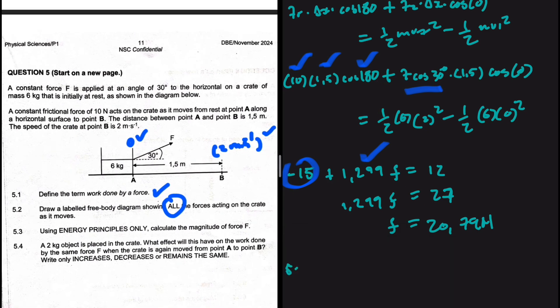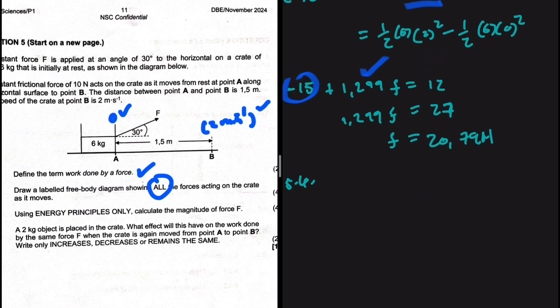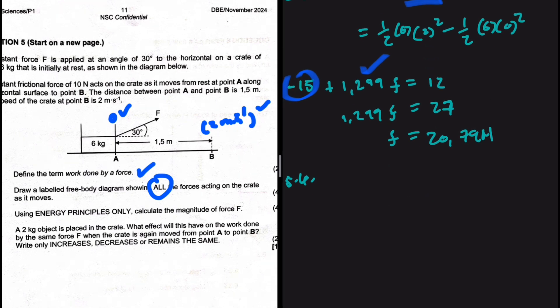And then 5.4. I want you to tell me the answer to this question. What did you write? A 2 kg block is placed in the crate. What effect will this have on the work done by the same force when the crate is again moved from point A to point B? Only increases, decreases or remain the same. So is the work done by the applied force going to increase or decrease when we add the 2 kg block on the crate? Or is it going to remain the same? Let me know in the comments.